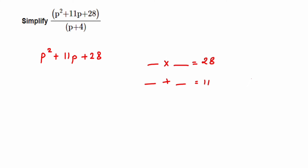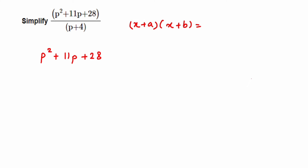We are actually using the fourth identity: (x + a)(x + b) = x² + (a + b)x + ab. As you can see, a × b gives the constant term, and a + b gives the coefficient of x. That is why I said: find two numbers whose product is 28 (that is a × b) and whose sum is 11 (that is a + b, the coefficient of p here).